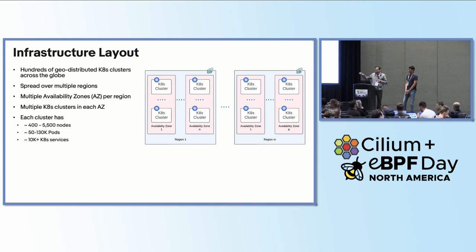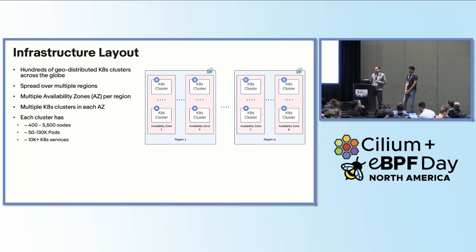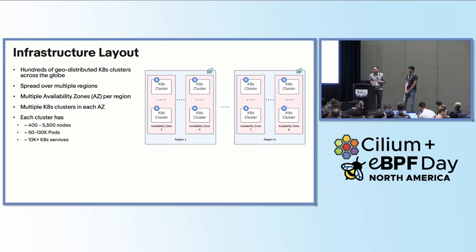Our applications are deployed across multiple AZs for high availability. Each of our clusters typically has 400 to 5,500 nodes. The way we have these clusters, it could be based on scale or based on security constraints such as PCI. We have anywhere from 50,000 to 130,000 pods per cluster, and typically more than 10,000 Kubernetes services in each of these clusters.